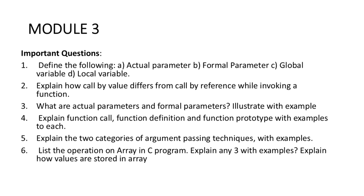Module 3 Important Questions: Define the following — A) Actual Parameter, B) Formal Parameter, C) Global Variable, D) Local Variable. Explain how call by value differs from call by reference while invoking a function. What are actual parameters and formal parameters — illustrate with an example. Explain function call, function definition, and function prototype with examples. Explain the two categories of argument passing techniques with examples. List the operations on arrays in C and explain any three with examples. Explain how values are stored in an array.